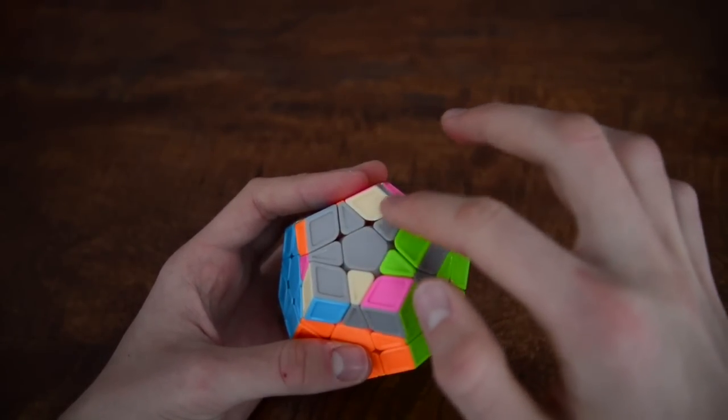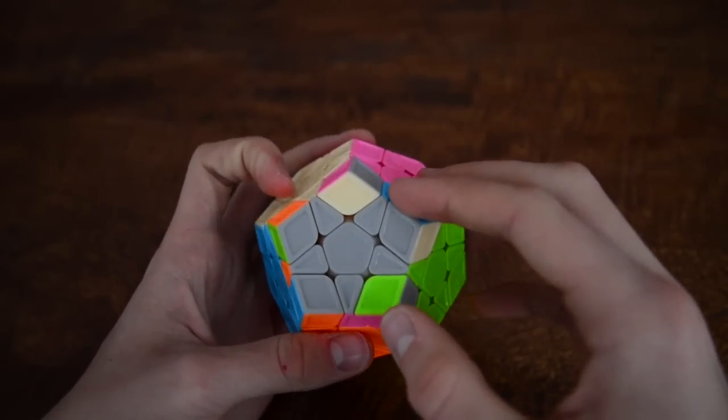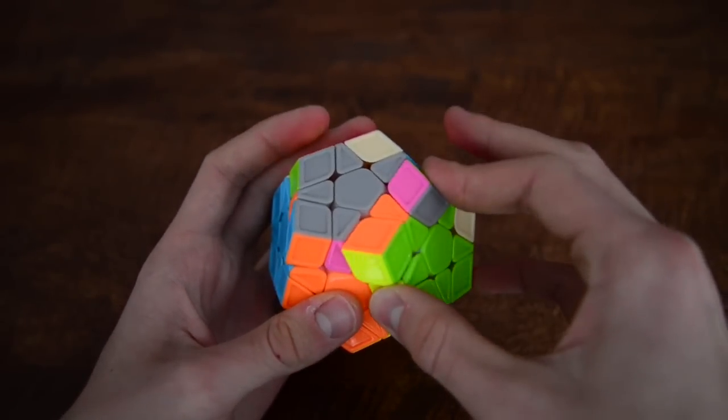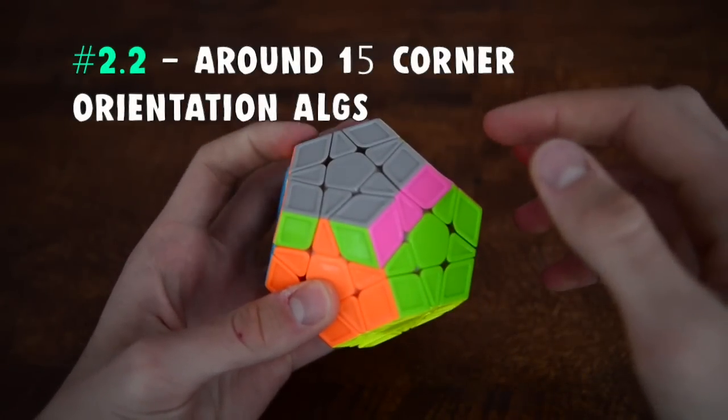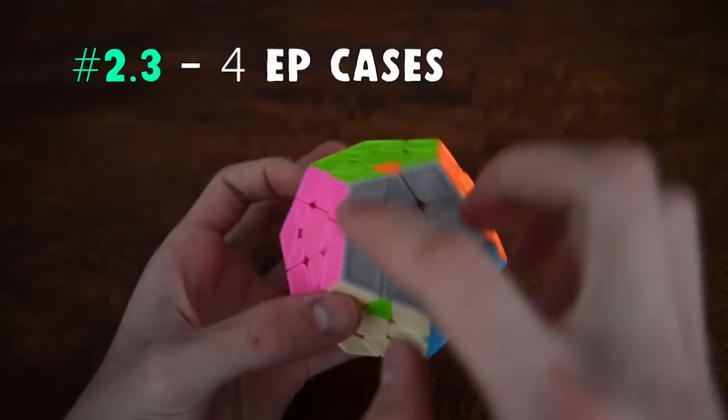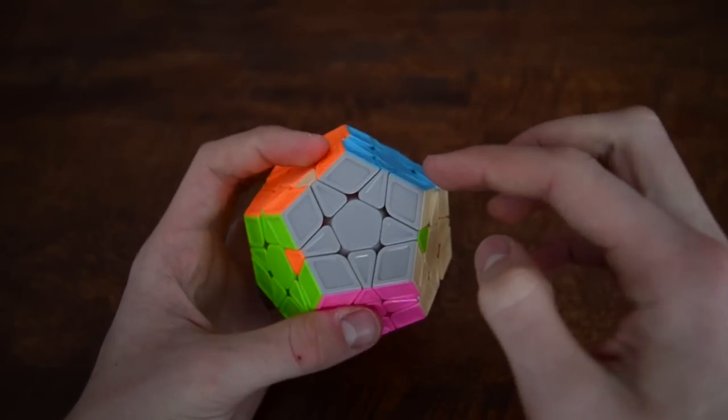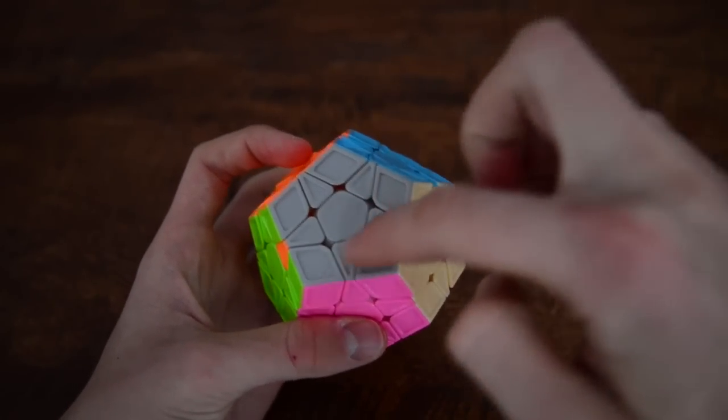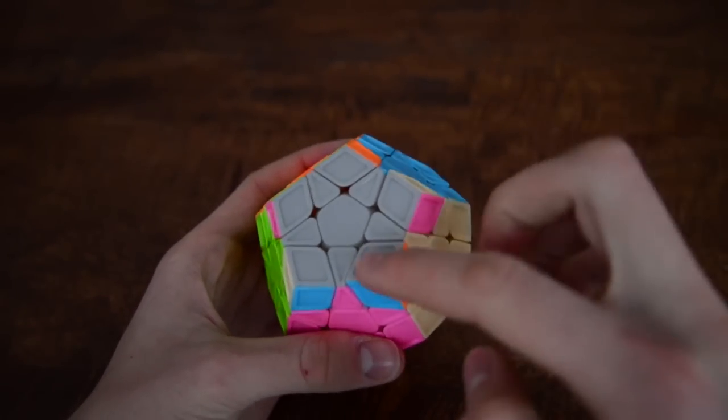Basically now I orient the edges. Now I orient the corners. Now I permute the edges. As you can see these two are solved, the blue and the pink. So I have to do an algorithm to swap these three. And now we have permuted the edges.